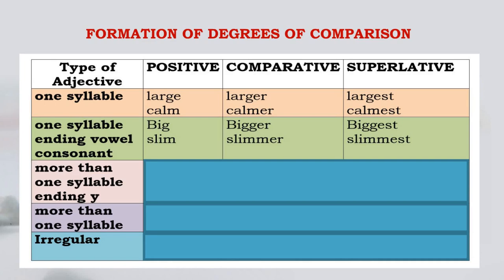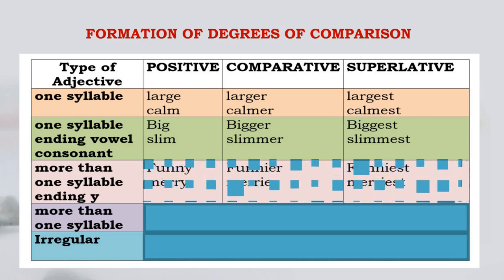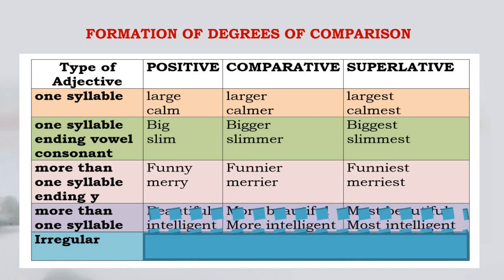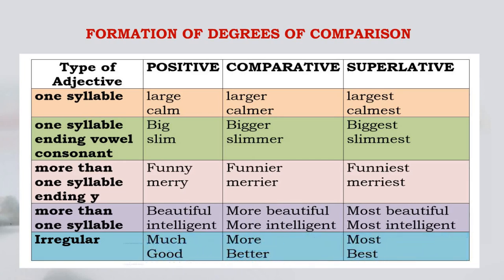For more than one syllable ending in Y: 'funny' — fun-ny, two syllables, ending with Y — becomes 'funnier' (Y becomes I-E-R) and 'funniest' (I-E-S-T). 'Merry,' 'merrier,' 'merriest.' For more than one syllable not ending in Y, like 'beautiful': 'more beautiful,' 'most beautiful.' 'Intelligent': 'more intelligent,' 'most intelligent' — using 'more' and 'most.' Then there are irregular forms: 'much,' 'more,' 'most'; 'good,' 'better,' 'best'; 'bad,' 'worse,' 'worst.' These are the irregular forms of degrees of comparison.